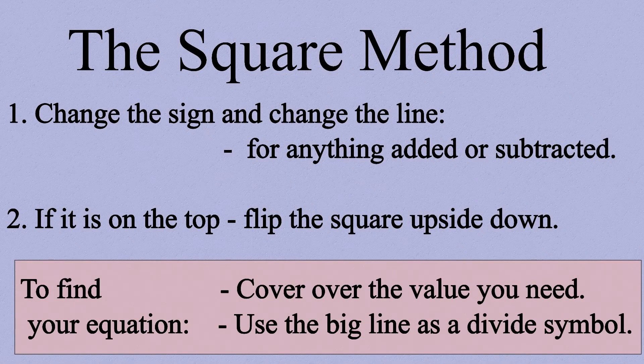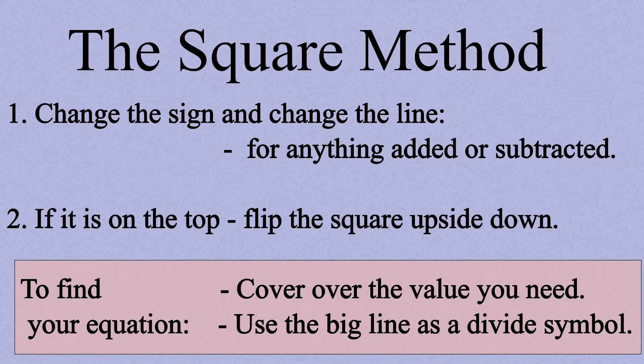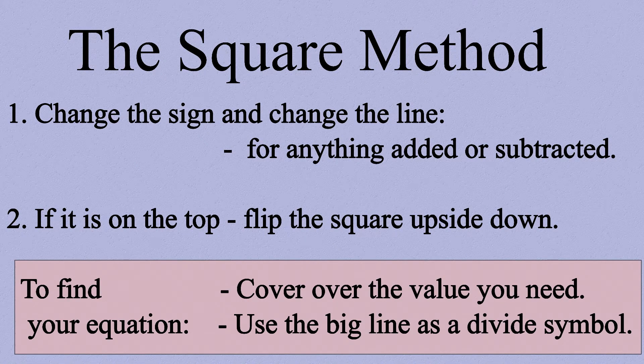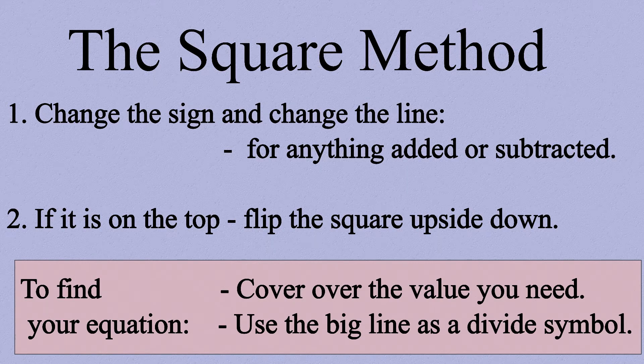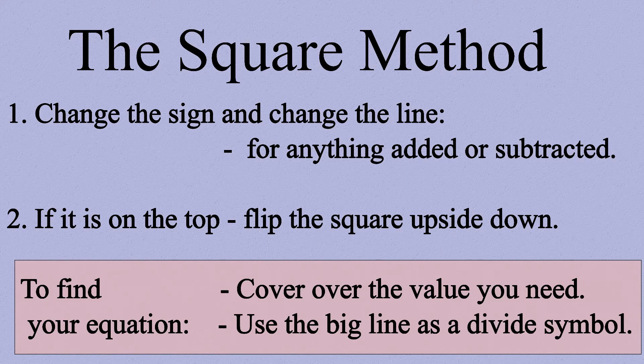The second rule: if the quantity you want is on the top, flip the square upside down so it's on the bottom. And that's it. After that, it's exactly the same as the triangle. You cover over the quantity you're interested in and that immediately gives you the equation you need to use to find it.